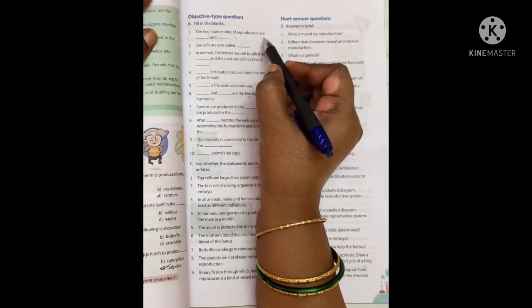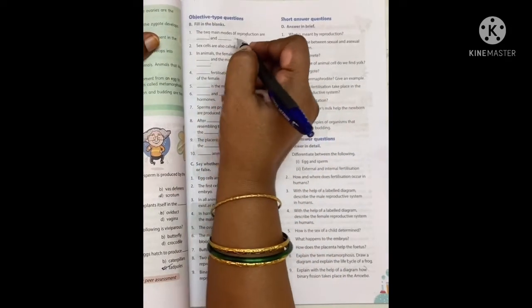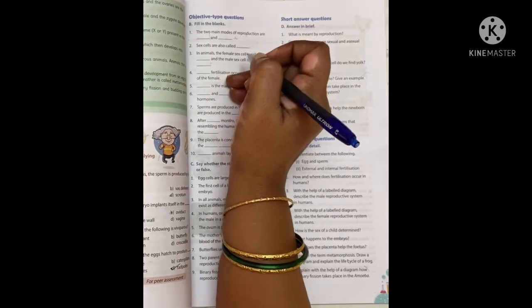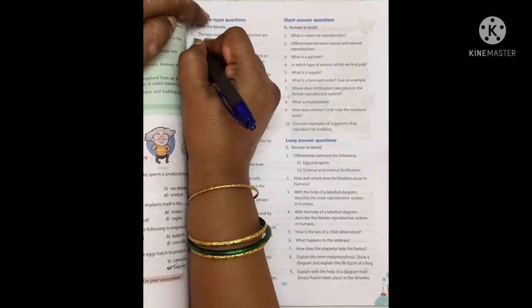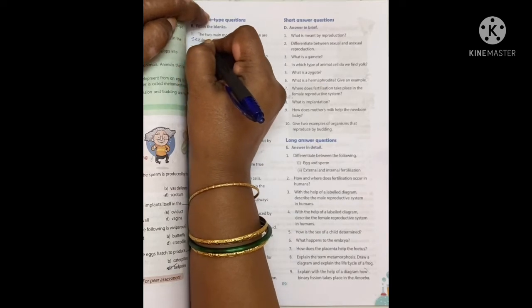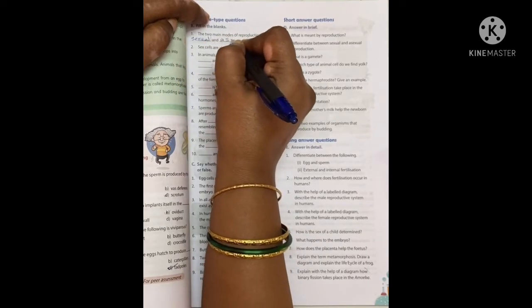Fill in the blanks. The two main modes of reproduction are sexual and asexual.